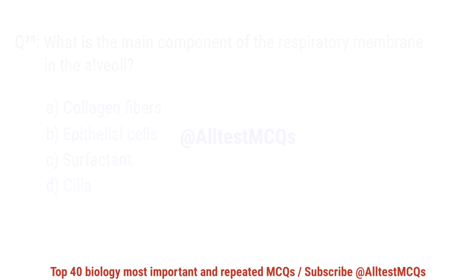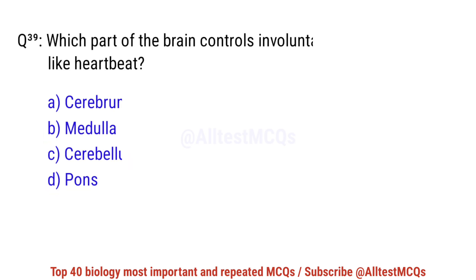Question number 39. Which part of the brain controls involuntary actions like heartbeat? The correct option is B: Medulla.